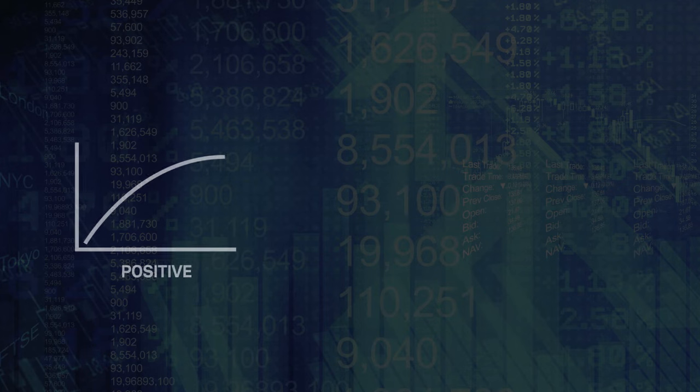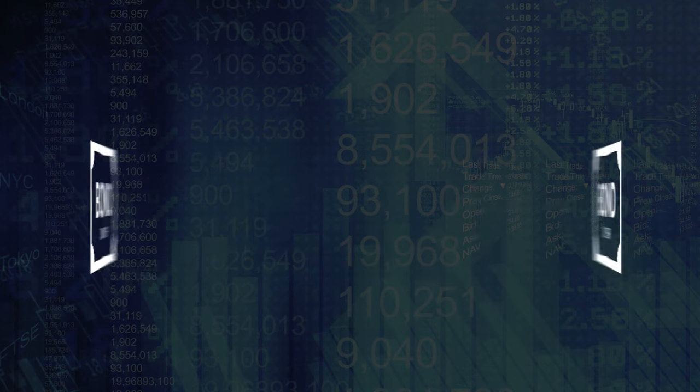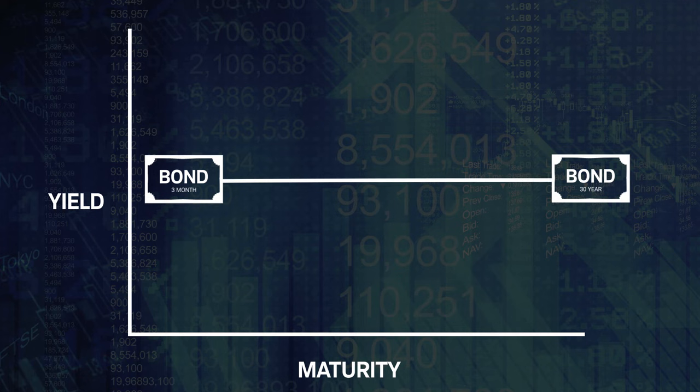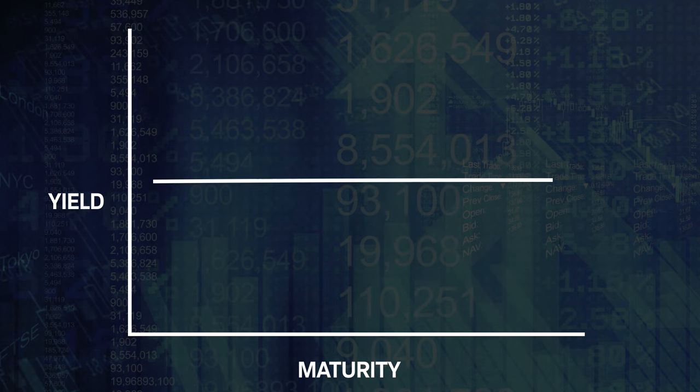Now that you understand positive and inverted yield curves, let's look at the third shape, a flat yield curve. This shape forms when yields of short and long maturities are roughly equal. A flat yield curve is usually a transition from positive to inverted, or from inverted to positive.